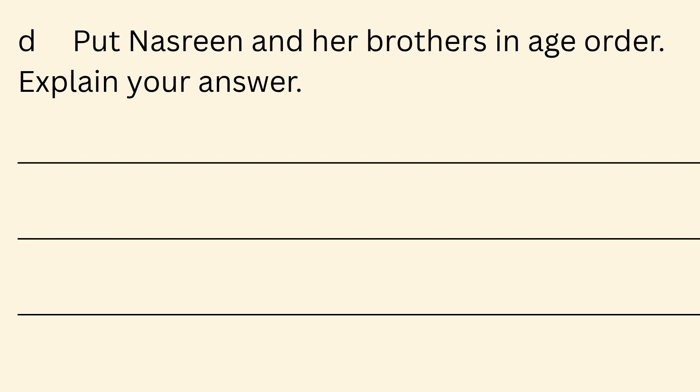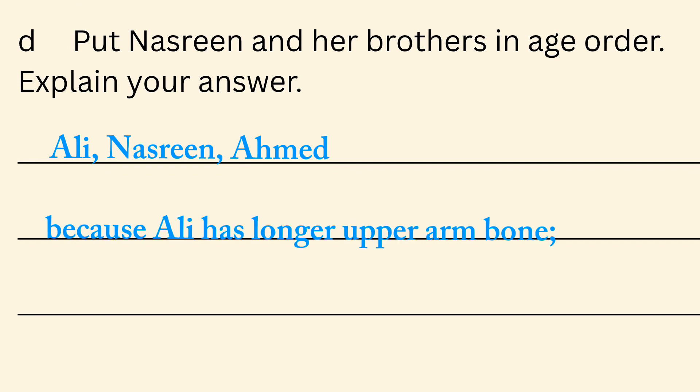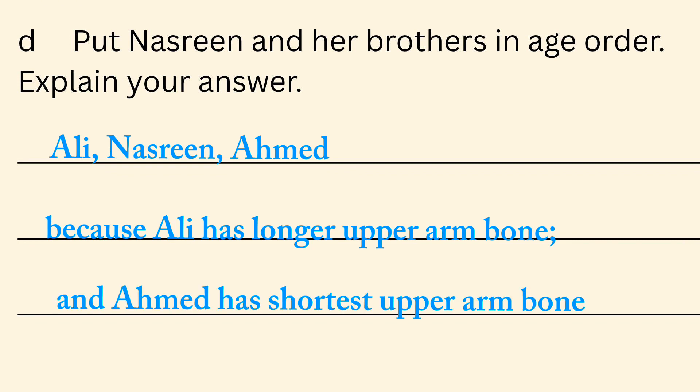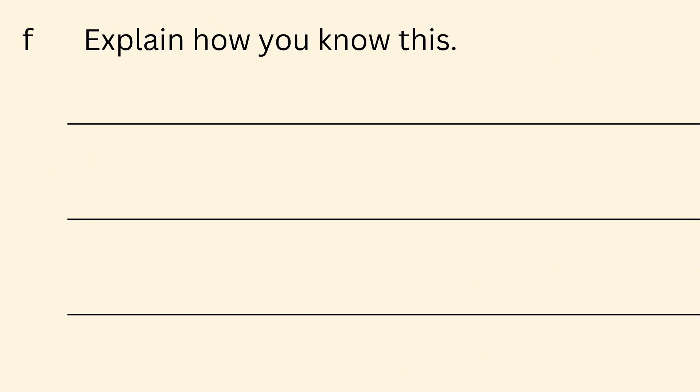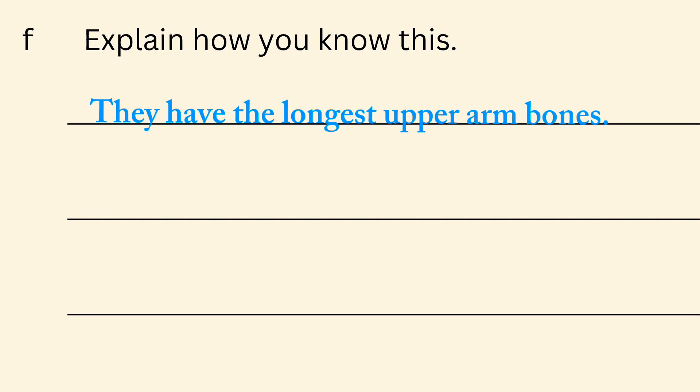D. Put Nasrin and her brothers in age order. Explain your answer. Ali, Nasrin, Ackman. Because Ali has a longer arm bone and Ackman has a shorter arm bone. E. Who are Nasrin's parents? Meshach and Fatima. F. Explain how you know this. They have the longest upper arm bones.